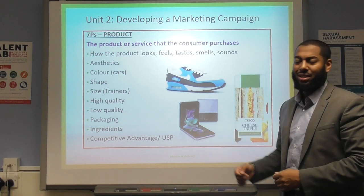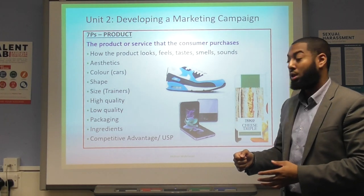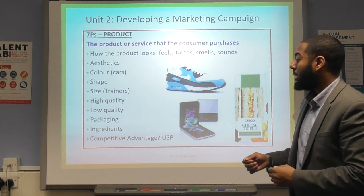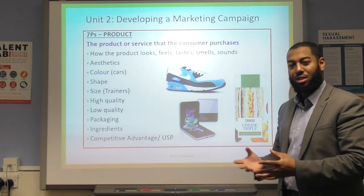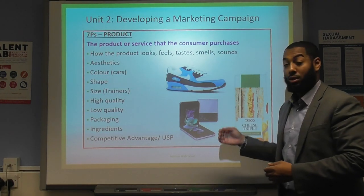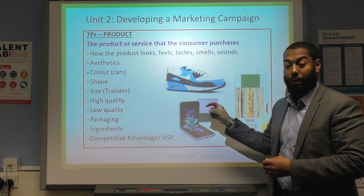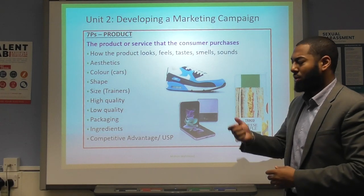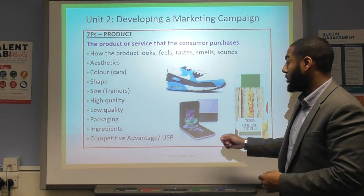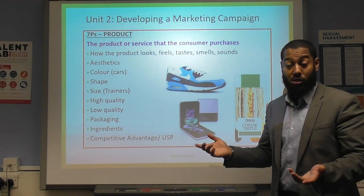We also look at packaging — is it strong or weak, and does it have the correct ingredients or legal information on it? You can link that to the legal aspect of your PESTLE analysis. Your product should also have a competitive advantage — a unique selling point. For example, Nike Air Max trainers have an air bubble which makes them more comfortable, and that's their USP. For Apple iPhone, the USP or competitive advantage could be FaceTime.